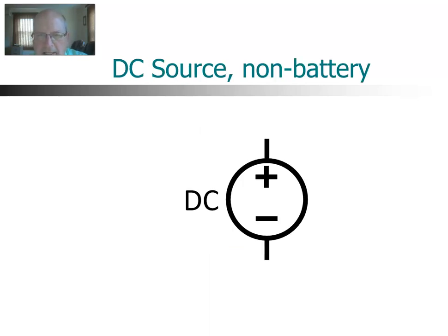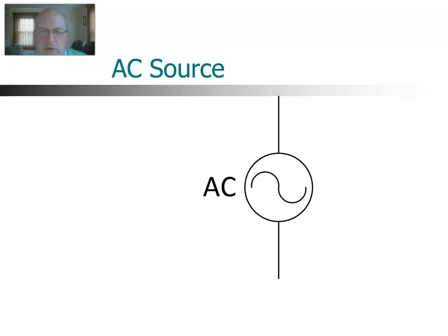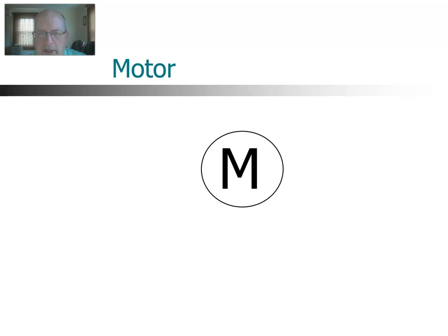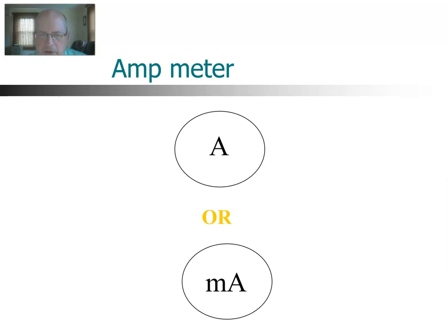Here is a more generic DC source symbol — usually indicating a DC source that is not a battery, such as an electronic power supply. That's a circle with polarity markings on it. An AC source is very similar — a circle, but this time with the symbol for a sine wave inside, because AC varies back and forth in the shape of a sine wave. A generator uses a circle with a capital G inside, and a motor uses a circle with an uppercase M. An amp meter is a circle with a large A, or perhaps MA for milliamps.